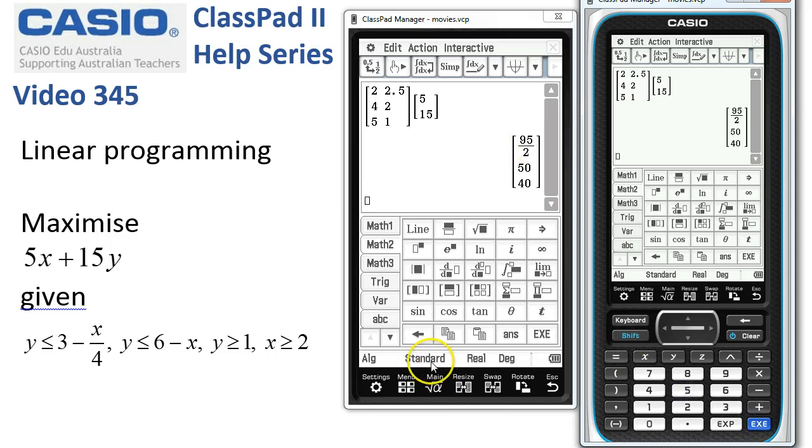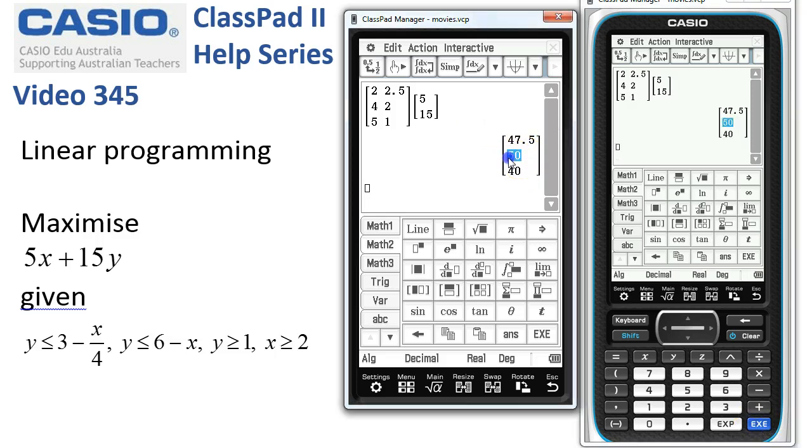Because I'm in standard mode, let's do it again in decimal, tap execute, here we go. We can see that the maximum value comes from the middle point, which is when x is 4 and y is 2. And so there's the optimum point, and the optimum value is 50.